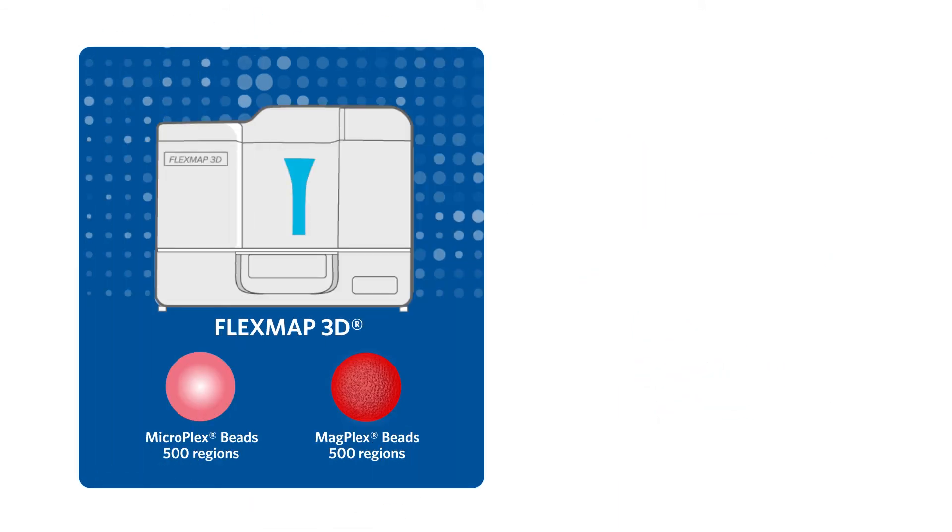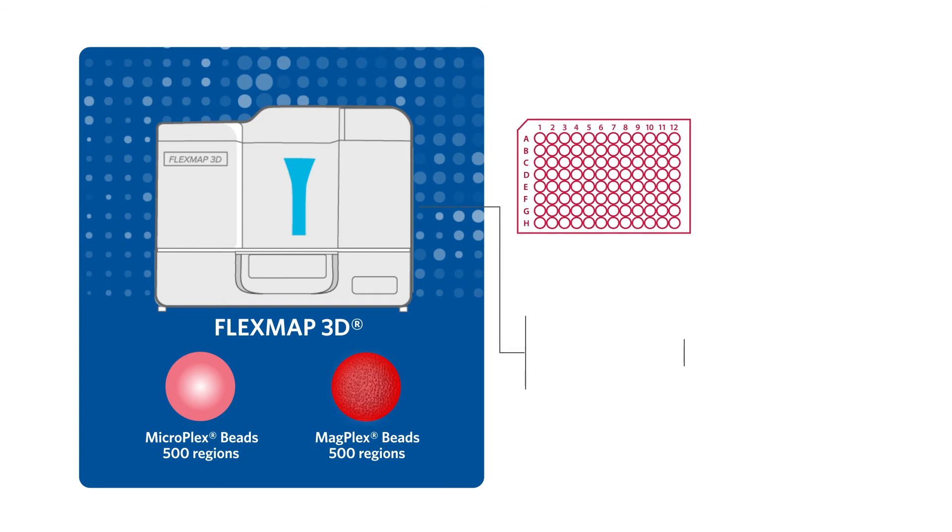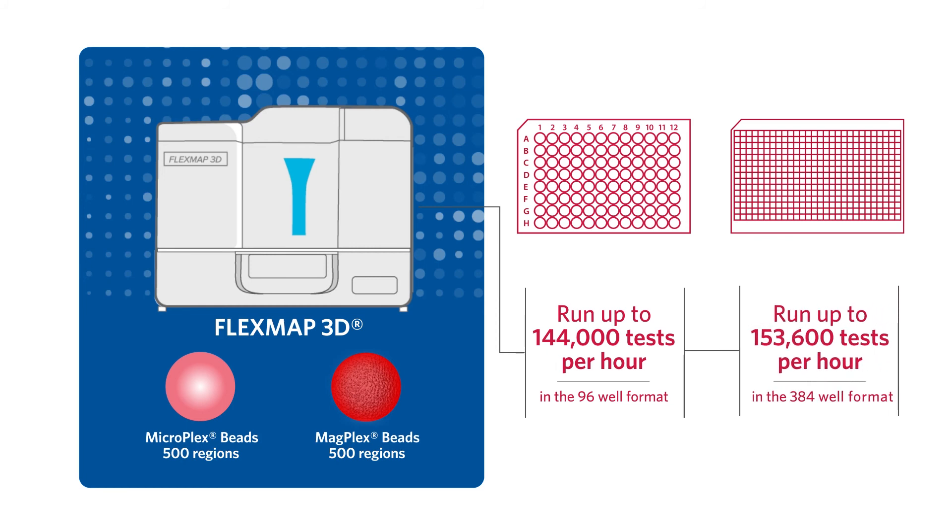The FlexMAP 3D can read up to 500 bead regions. It analyzes a 96-well plate in 20 minutes and a 384-well plate in 75 minutes.